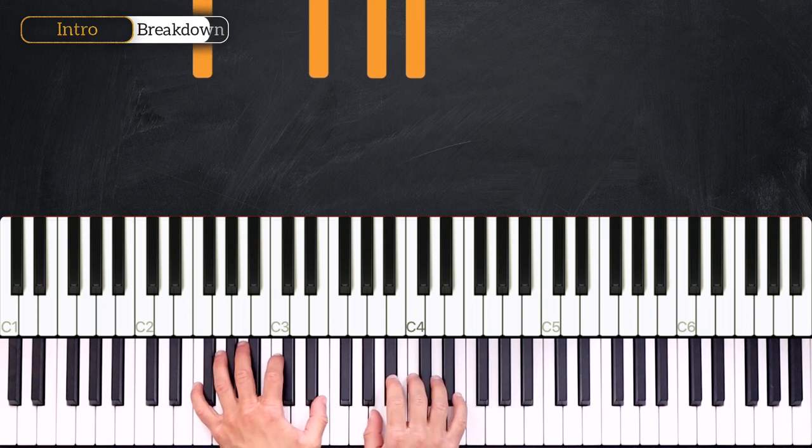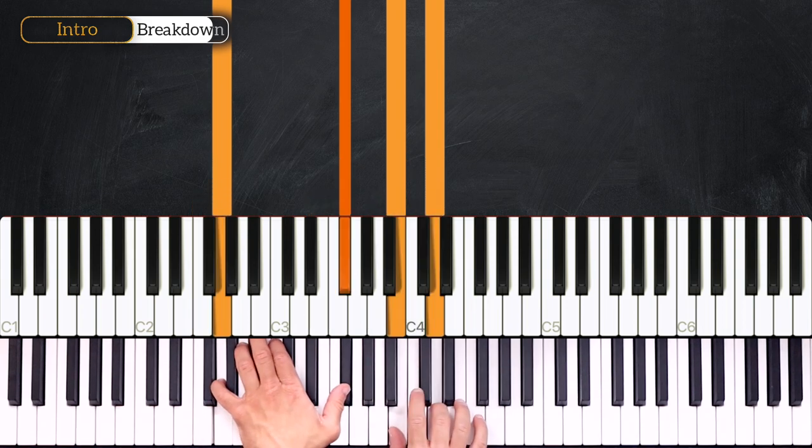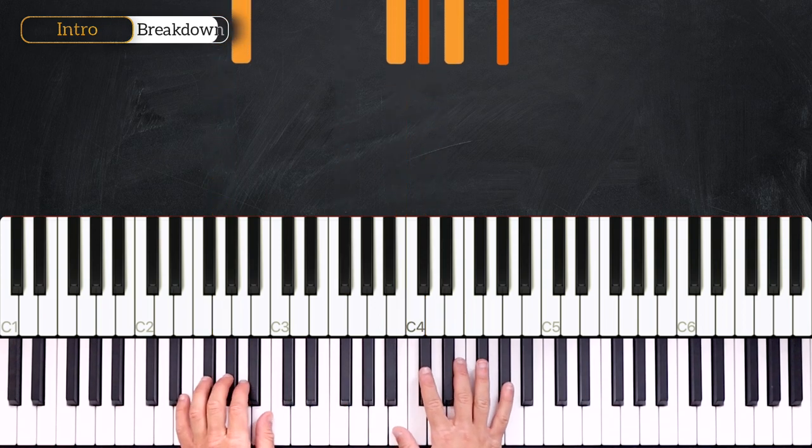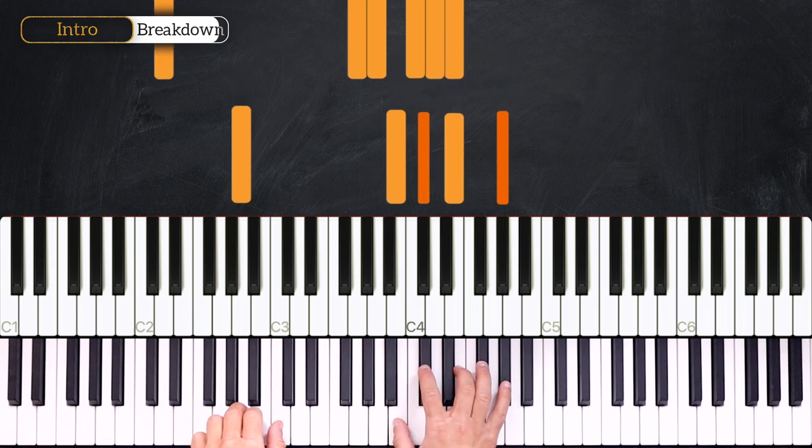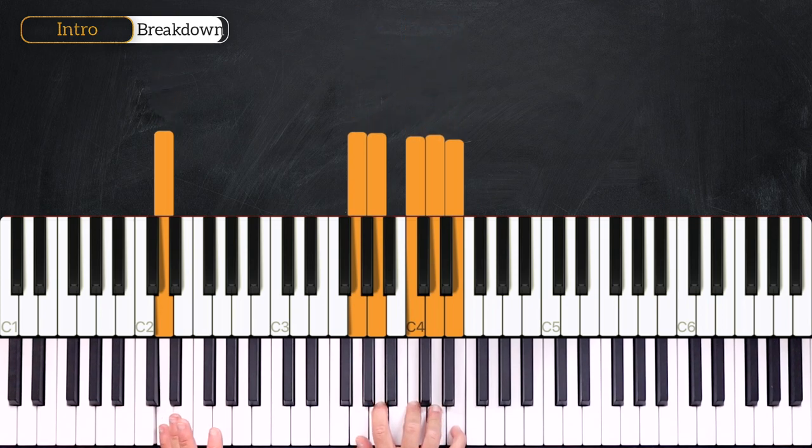So right after we'll play F major 7. 1 2 and 3 4 into the G major 7. And then we'll finish by playing the last 2 chords. A major 9. 1 2 and 3 4 into the D9 sus4. Just like that.